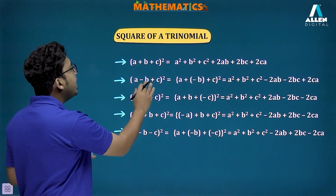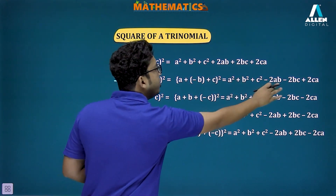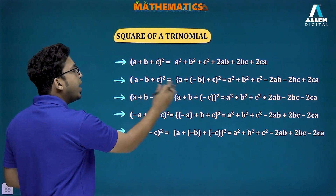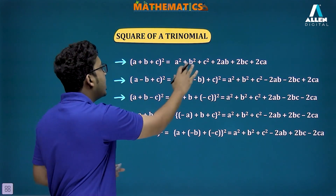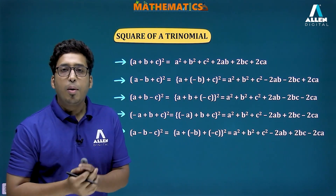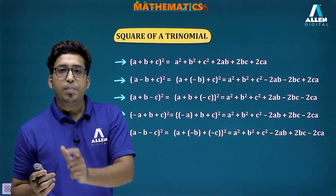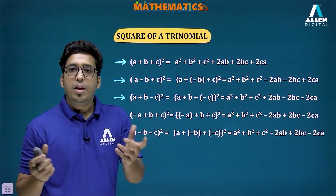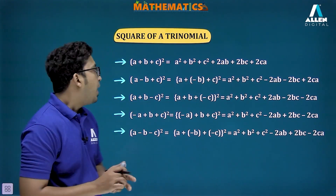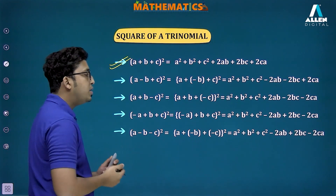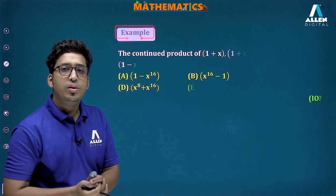All these identities are very similar. In the second case write -b in place of b, and in the third case write -c in place of c, and apply the first identity. Even if you have trouble memorizing, you can always multiply (a+b+c)(a+b+c) term by term and get the same result. You just have to memorize this identity for smooth calculations — all other variants are based on this first identity.